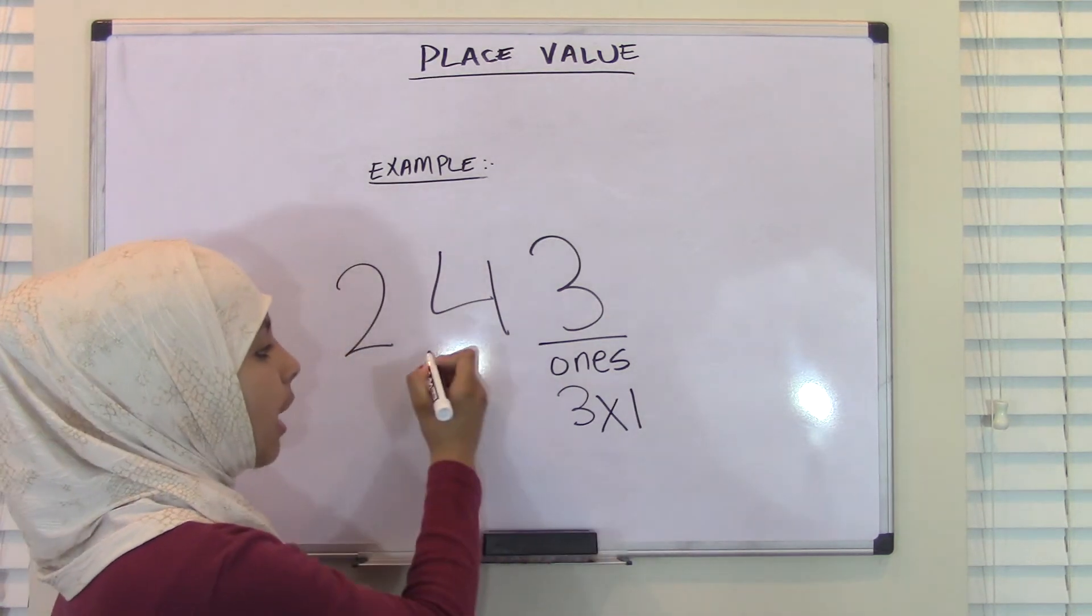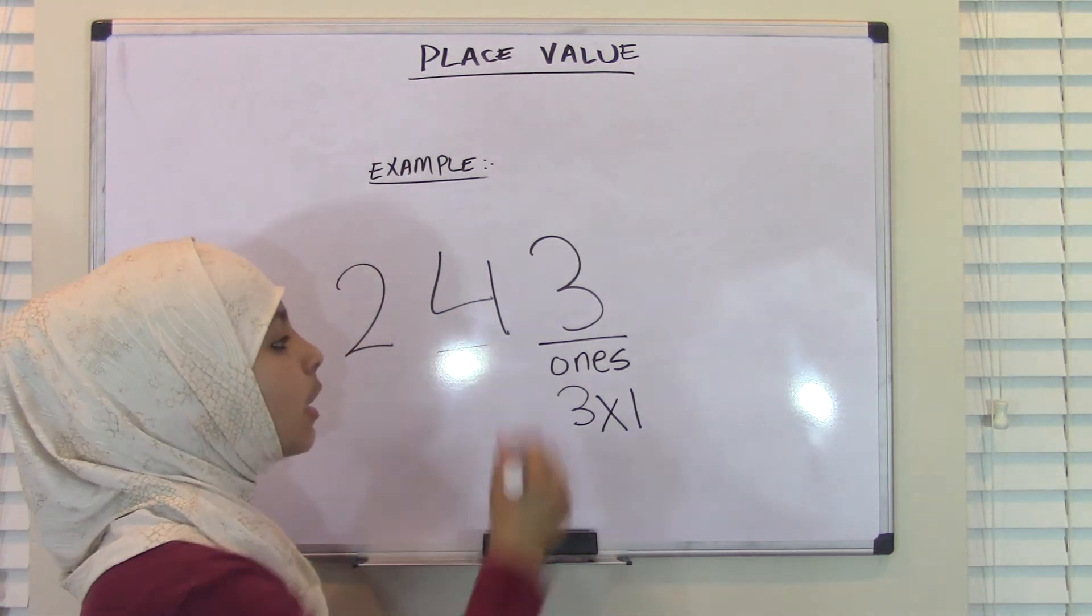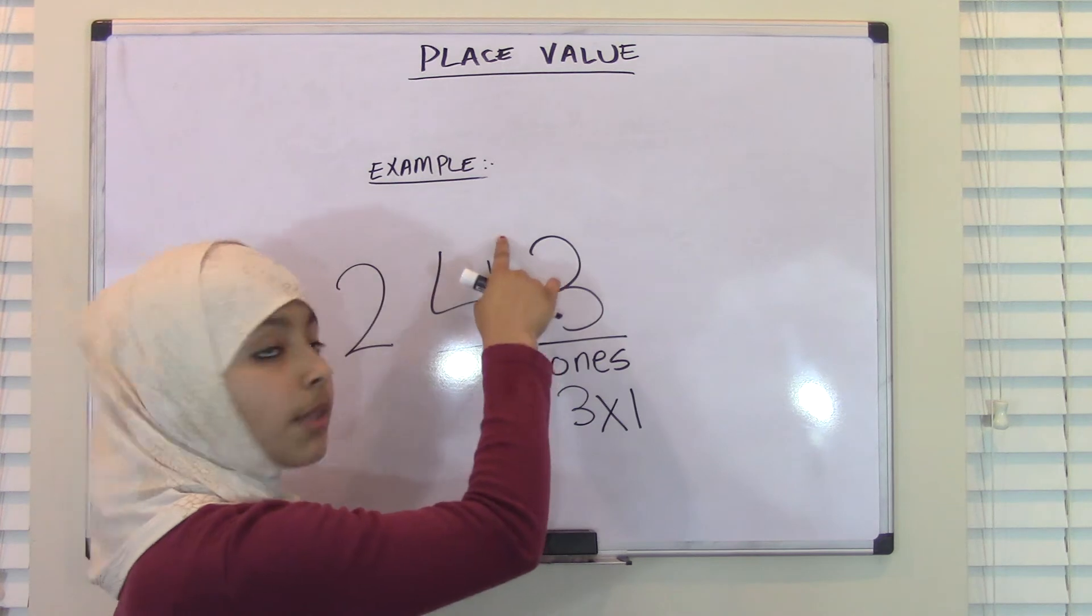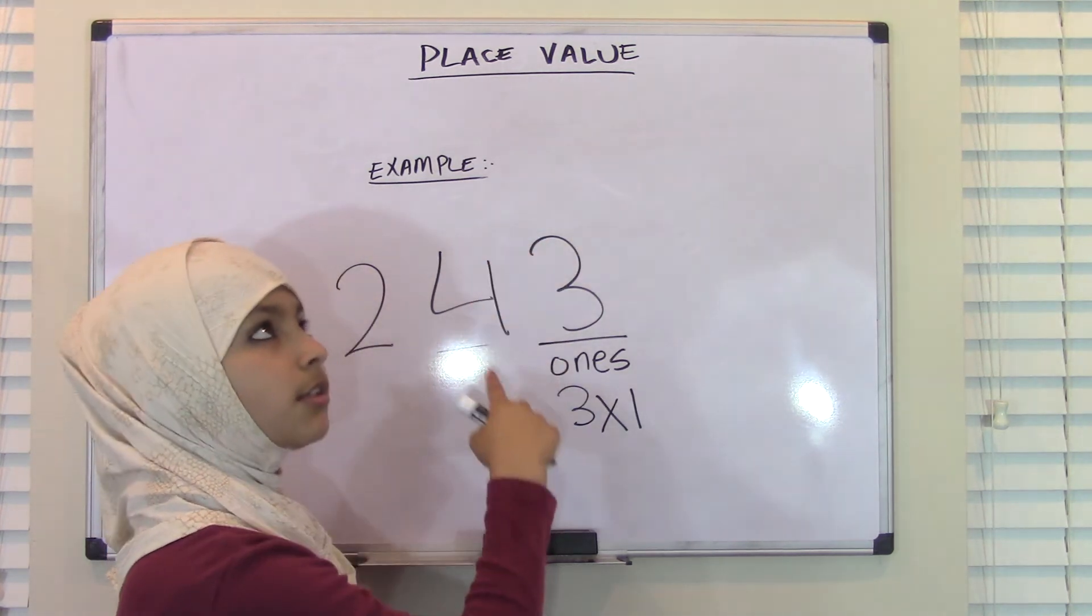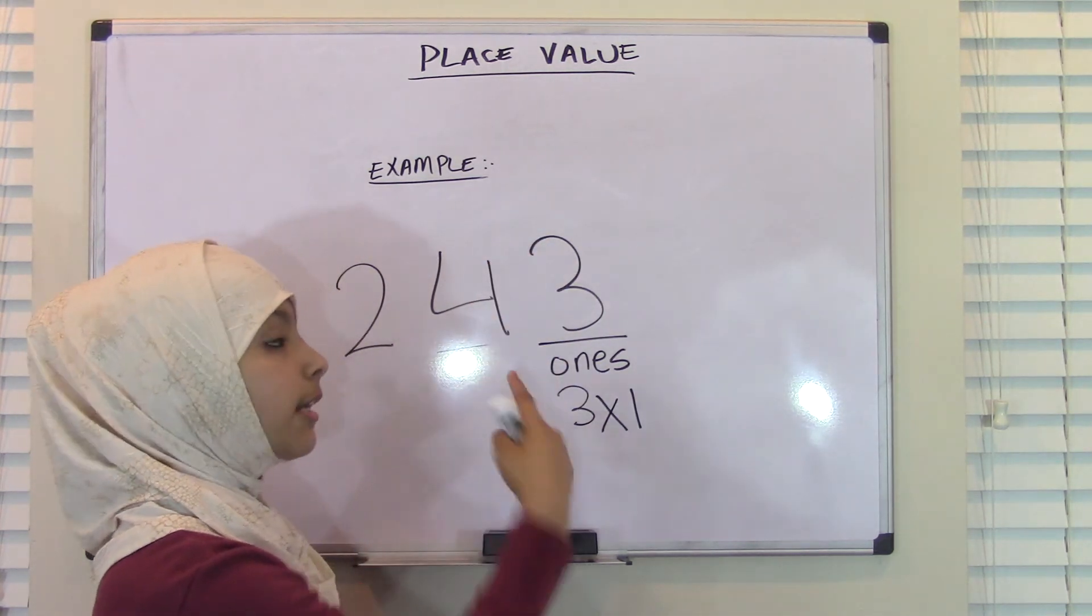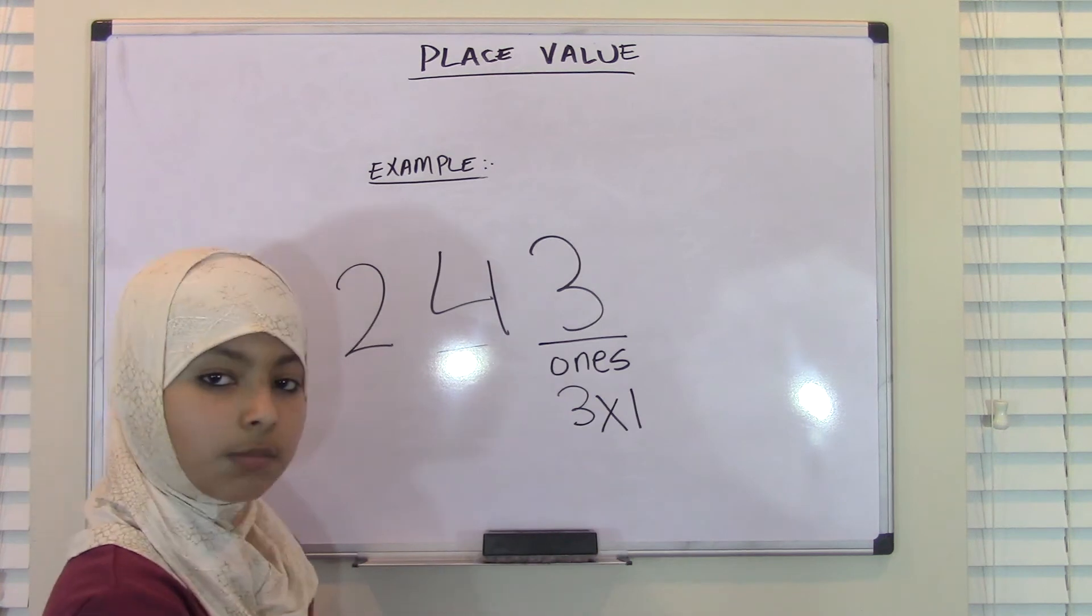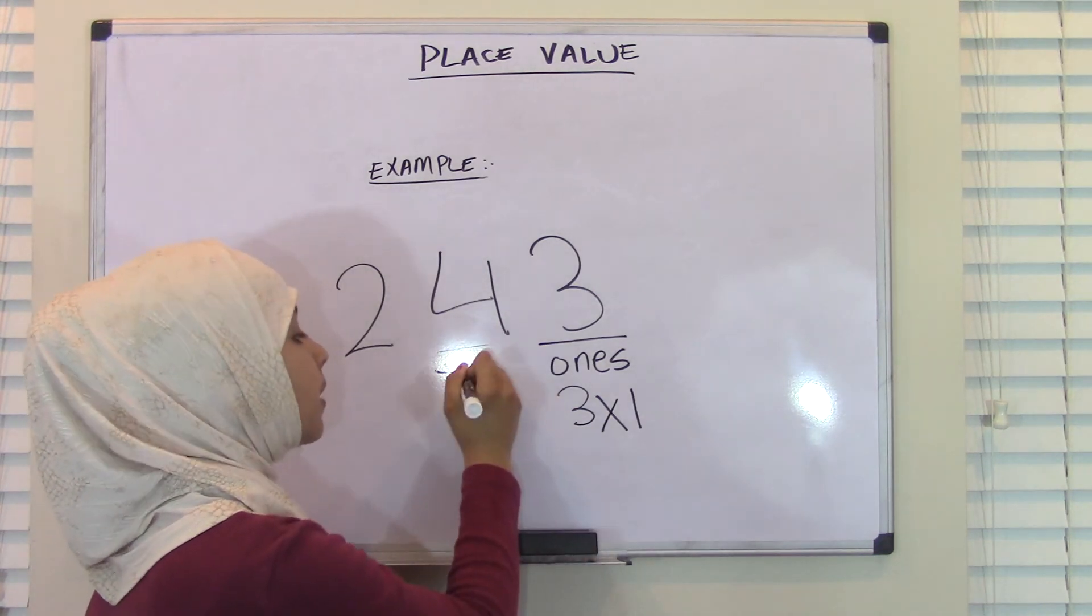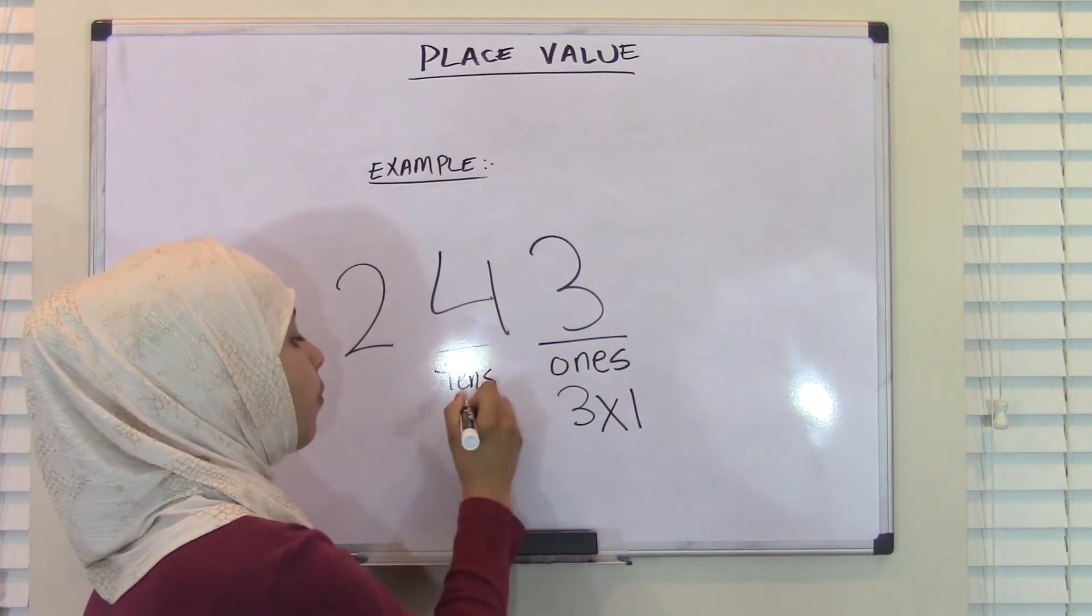The next digit, however, is 10's because we can do from 10 to 99 when we do 10's place value. So, this would become 10's, or 4 times 10.